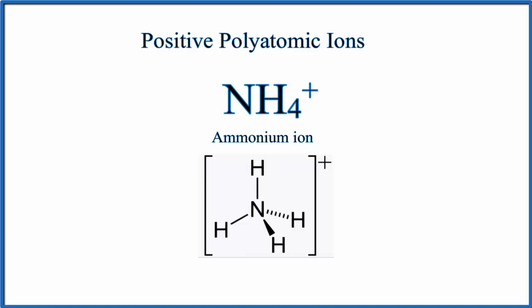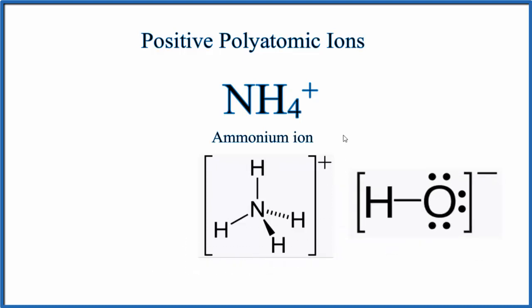For example, if we had the hydroxide ion, that could form an ionic bond with NH4+. The OH- and the NH4+ — a positive and a negative — those two ions are attracted and would form an ionic bond. Other ions such as SO4 2- and PO4 3- can also bond with the ammonium ion.